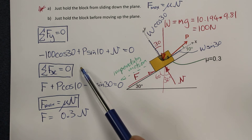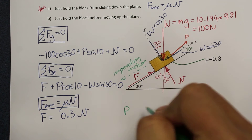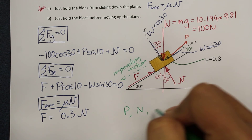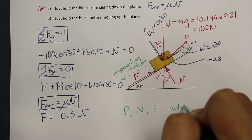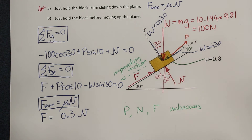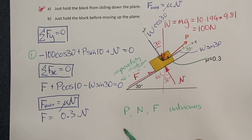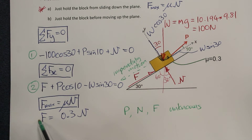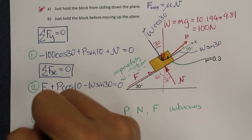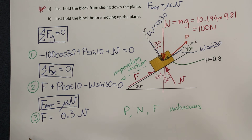So we have three equations and three unknowns. The unknowns in our equations are P, N, and F. We can call these equation 1, equation 2, and equation 3. Now it is just a matter of doing simultaneous equations.